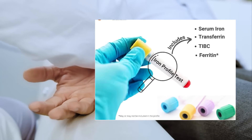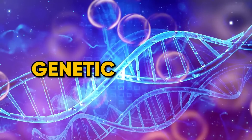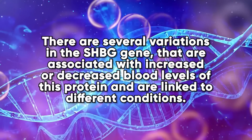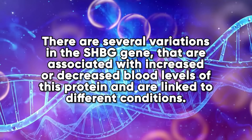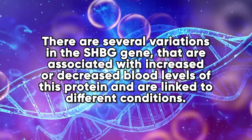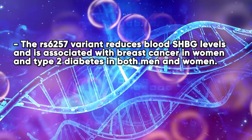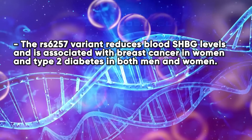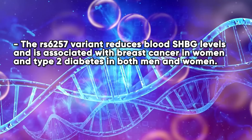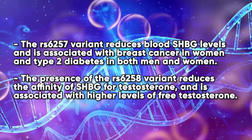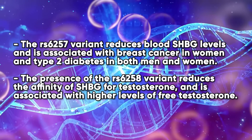Are there any genetic factors associated with elevated or low SHBG? There are several variations in the SHBG gene associated with increased or decreased blood levels of the protein, linked to different conditions. The rs6257 variant reduces blood SHBG levels and is associated with breast cancer in women and type 2 diabetes in both men and women. The rs6258 variant reduces the affinity of SHBG for testosterone and is associated with higher levels of free testosterone.